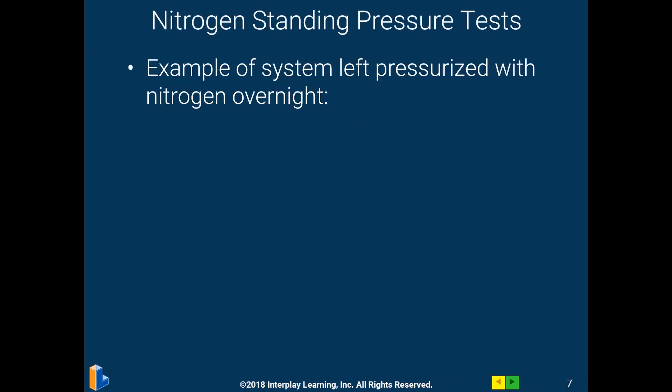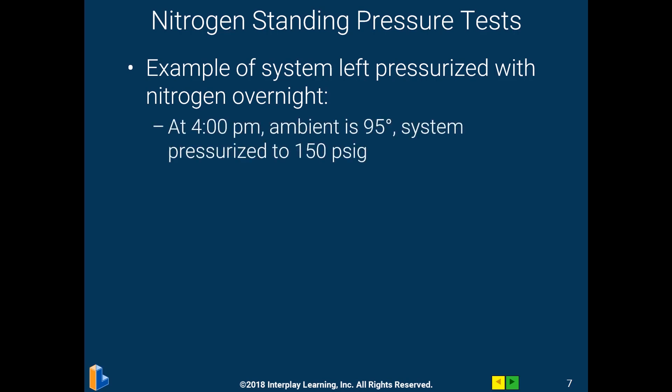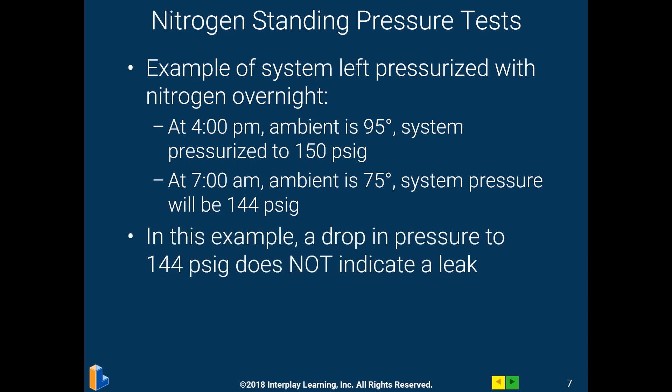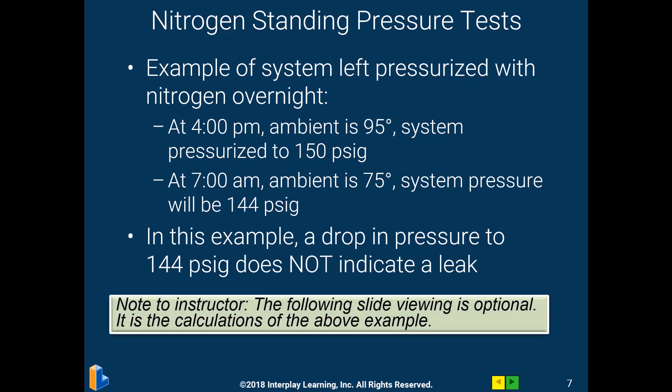Here's an example of how you could be fooled by this. We leave a system overnight. We begin our pressure test at 4 o'clock and it's 95 degrees outside. We test our R22 system at 150 PSIG. We come back the next morning and it's only 75 degrees out. The system is subject to a lower ambient temperature, we look at our gauge, and it says we lost 6 pounds of pressure. We think we must have a leak — but this is not an example of a leak, and there's some math we can do to show how that works.